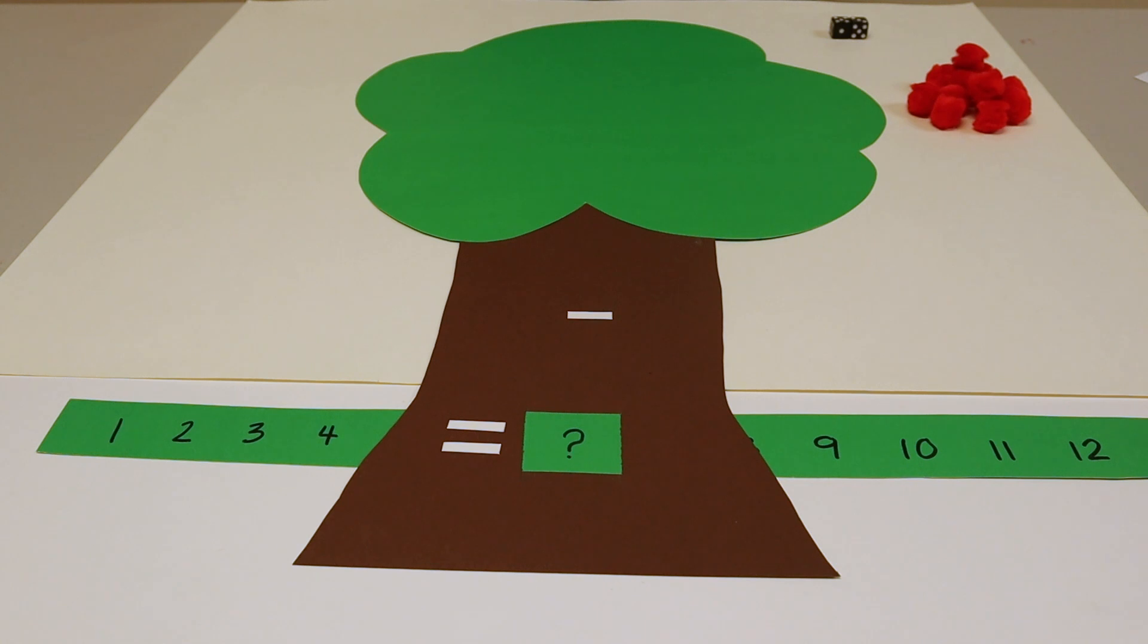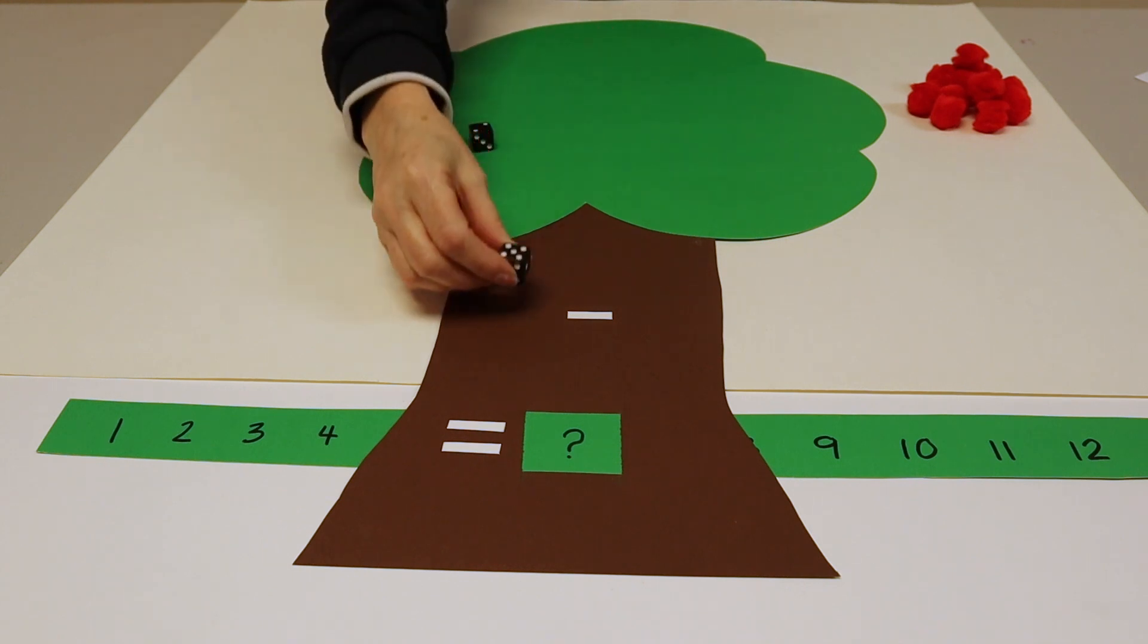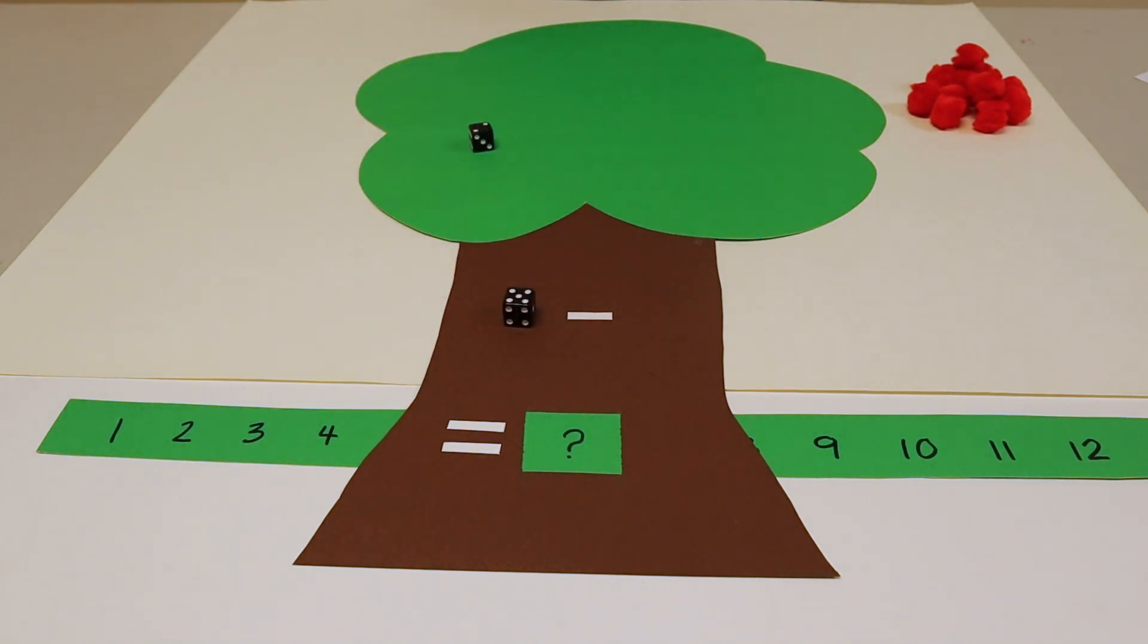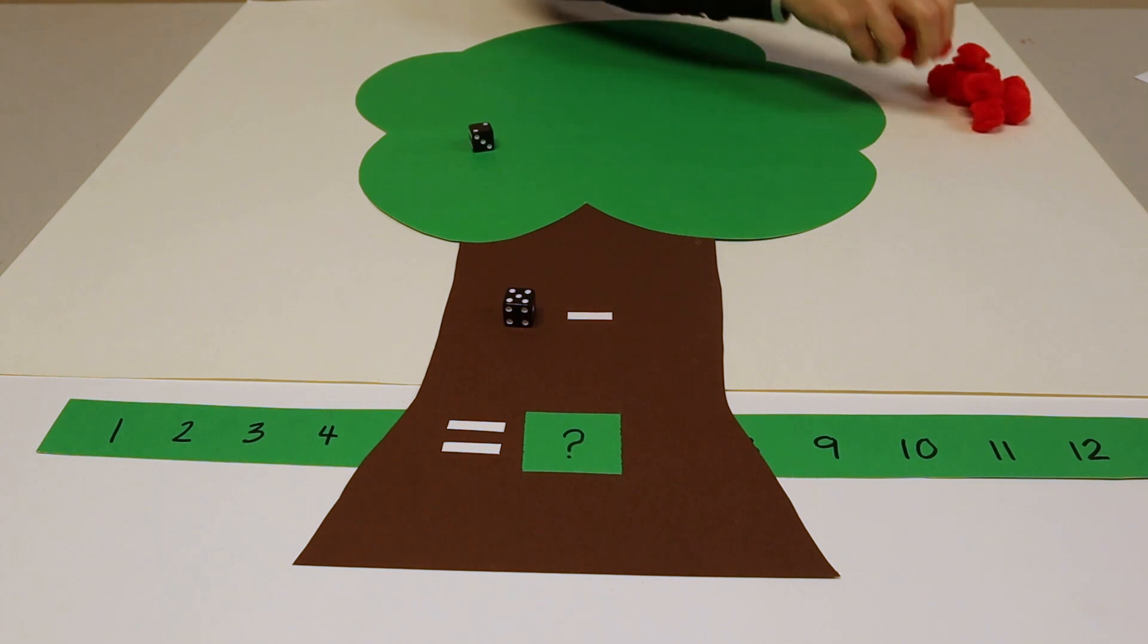The next game will teach your children basic subtraction and you'll only be using one color of the pom-poms. Your little one can roll the dice and select the larger number and place it beside the subtraction sign and count out five apples.